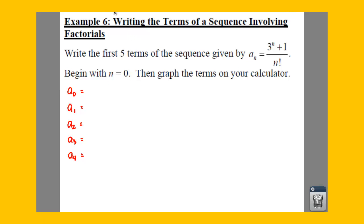So we're going to plug 0 into our expression, and we're going to say 3 to the 0 plus 1 over 0 factorial. Well, 3 to the 0 is just 1, so you have 1 plus 1, and remember on the previous page we said 0 factorial is equal to 1, so we have 2 over 1, which is just 2.